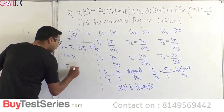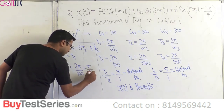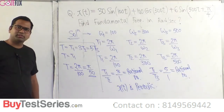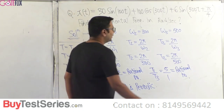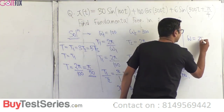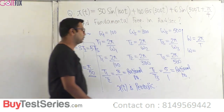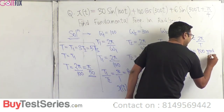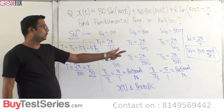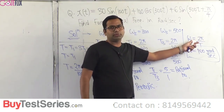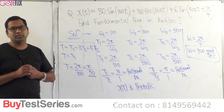The time period T = T1 = 2π/100 = π/50. The question asks for fundamental frequency in radians per second: ω = 2π/T = 2π/(π/50). Pi cancels and 50 multiplies by 2, giving ω = 100 radians per second as the fundamental frequency.